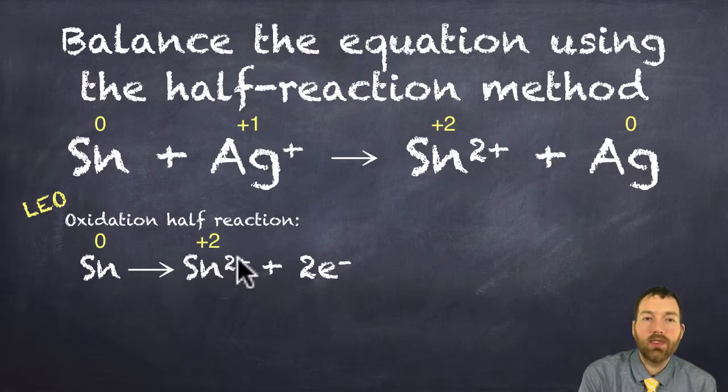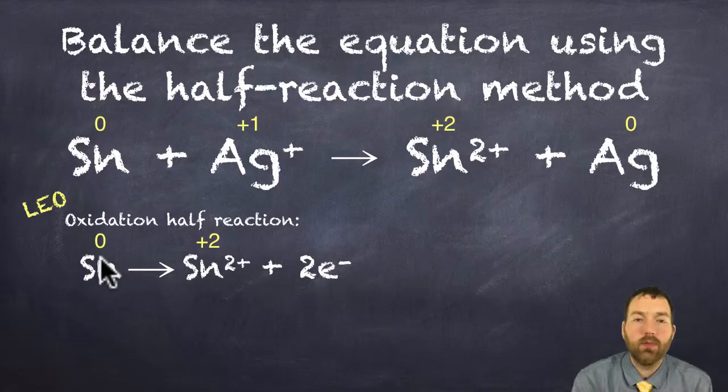Two minus two plus is zero on the left, we have zero. So that is the half reaction for oxidation.